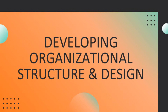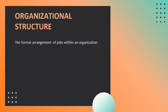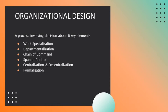Organizational structure is the formal arrangement of jobs within an organization. Organizations use organizational charts, which are visual representations of the organization's structure. Organizational design is a process involving decisions about six key elements. First, work specialization means dividing work activities into separate job tasks — the degree to which tasks are divided into separate jobs with each step completed by a different person. Over-specialization can result in human diseconomies from boredom, fatigue, stress, poor quality, increased absenteeism, and high turnover.